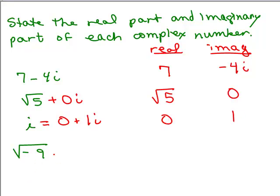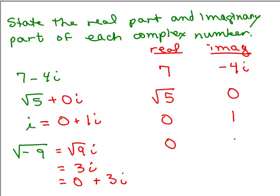For the last one, remember the square root of negative 9 is 3i, which could be written as 0 plus 3i. So the real part is 0 and the imaginary part is 3.